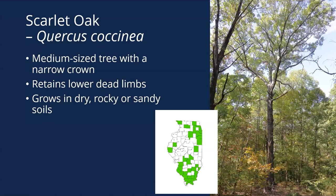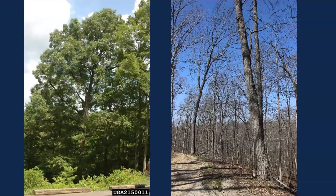Scarlet oak is another really dry-site oak. You'll find it growing in poor soils. It's a little bigger — a medium-sized tree. It often retains its lower limbs, its lower dead limbs — that's one characteristic fairly consistent with scarlet oak. It grows in dry, rocky or sandy, poor-site soils. Dry uplands are really where you're going to see this plant.